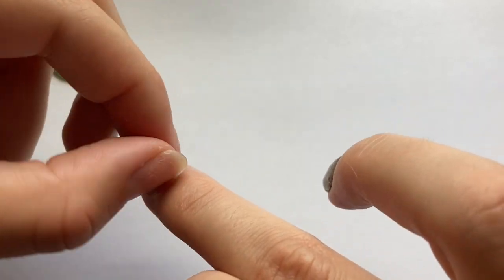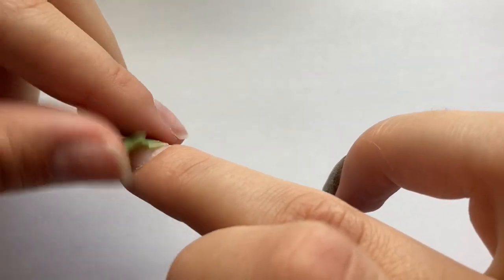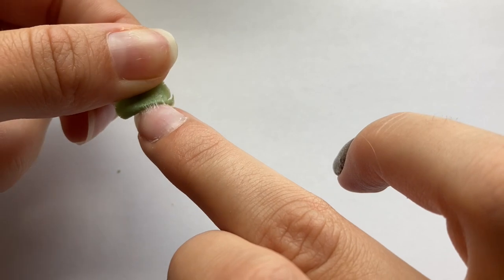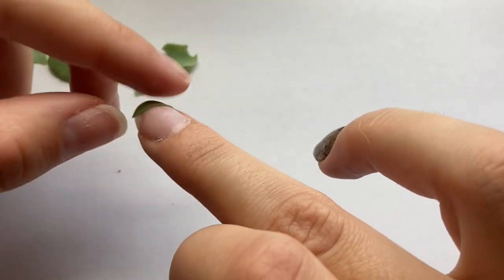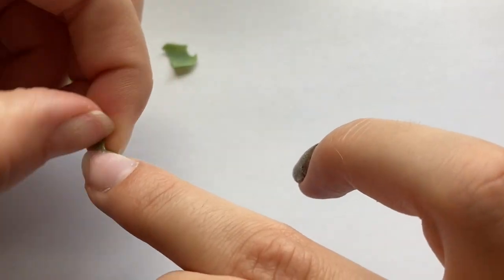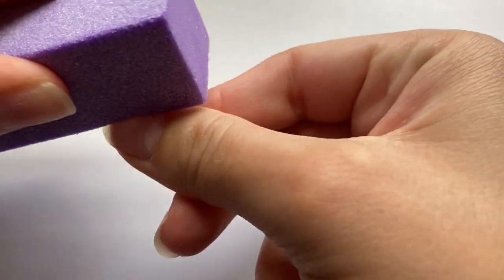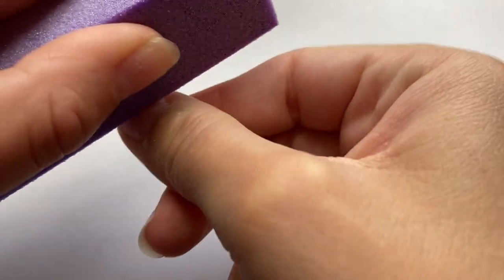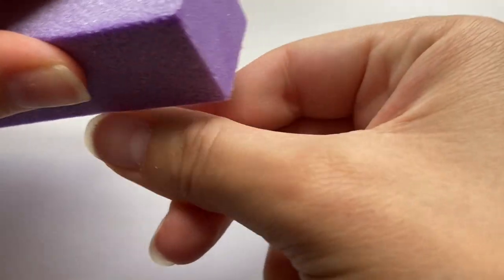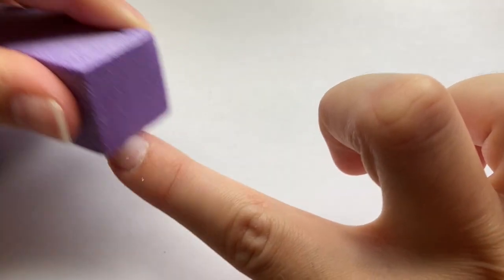And I guess I forgot to hit the record button for my ring and pinky fingernail, but I feel like you kind of got the idea already. Now I'm just going to go ahead and buff off that excess gel that stayed on my nails and then finally apply some cuticle oil.